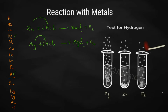Now write and see what will happen when some iron filings are added to hydrochloric acid. You will be getting ferrous chloride - FeCl2 will be formed. Along with that, hydrogen gas will be produced.